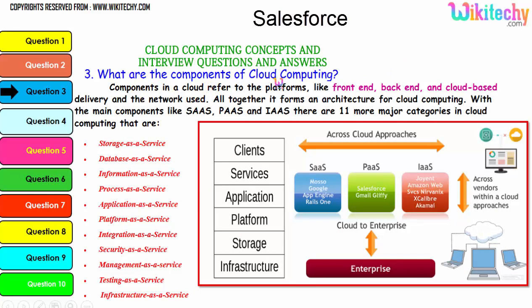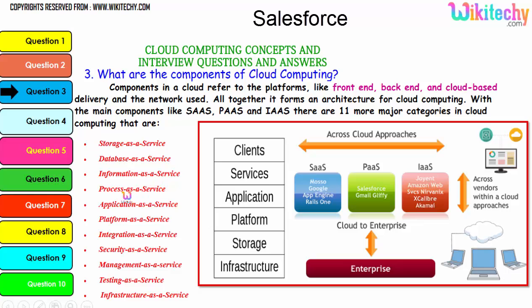Now let's talk about the components of cloud computing. Components in a cloud refer to platforms like front-end, back-end, cloud-based delivery, and the network used. Together they form an architecture for cloud computing with the main components: software as a service, platform as a service, and infrastructure as a service. There are 11 major categories in cloud: storage as a service, database as a service, information as a service, process as a service, application platform, integration, security, management, testing, and infrastructure.